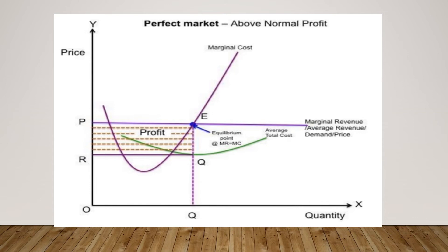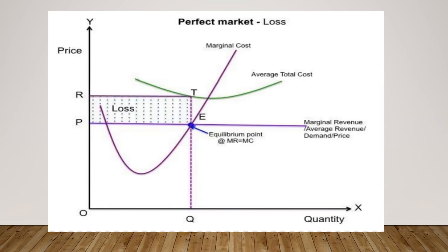Above normal profit occurs when average total cost is less than average revenue. A loss occurs when average total cost is greater than average revenue.